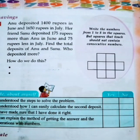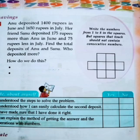Listen to the problem on savings. Anu deposited Rs. 1,400 in June and Rs. 1,650 in July. Her friend Sanu deposited Rs. 175 more than Anu in June and Rs. 75 less in July. Find the total deposits of Anu and Sanu. Who deposited more? We want to find the deposits of Anu and Sanu for the months June and July. The deposit amounts of Anu are already given. Anu's deposit amount is the base for Sanu's deposit.